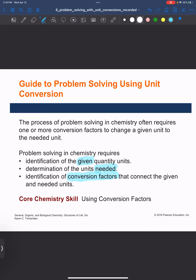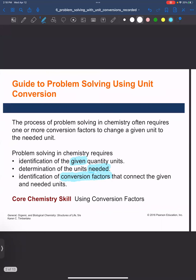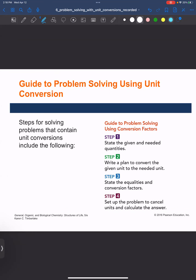Throughout this video and in future videos, you will see me consistently identifying the given amounts in a word problem. I also will identify what's needed to be solved, and we'll write down the conversion factors needed to connect the given to the need. If you follow this method, it takes the guesswork out of setting up any word problem. Even when I was doing research in graduate school, I would consistently use this method. The steps are: write down the given and needed quantities, write a plan to convert the given unit to the needed unit, look up equalities and write conversion factors, then set up the problem to cancel units and calculate the final answer.